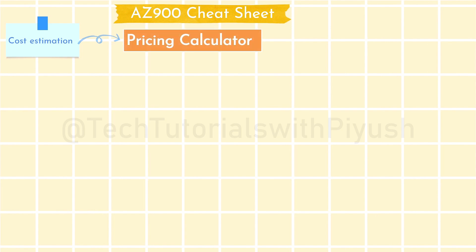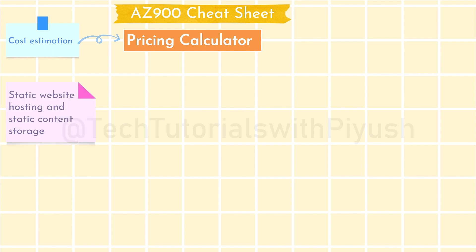For cost estimation, Azure provides the Azure Pricing Calculator, and there is also the Total Cost of Ownership (TCO) calculator. Make sure you understand the difference between these two. TCO focuses on the estimated savings when you move from on-premises to the cloud, whereas the Pricing Calculator calculates the estimated cost of resources you are going to provision in Azure.